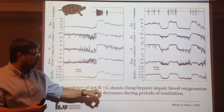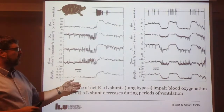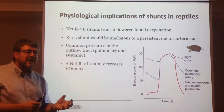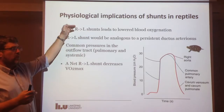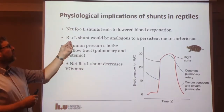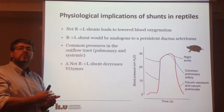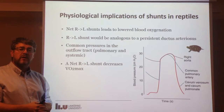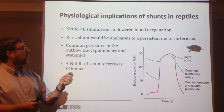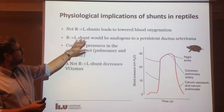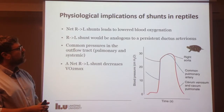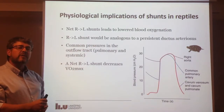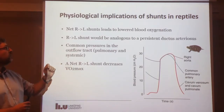Notice very clearly that despite the presence of this right-to-left shunt at all times, there is a decrease in the net right-to-left shunt during periods of ventilation. When the animal ventilates, pulmonary flow increases much more than systemic flow, so the ratio between pulmonary and systemic flow increases. The net shunt is in the right-to-left direction, bypassing the lungs, but it actually decreases during ventilation. This right-to-left shunt would be similar to what I described in the previous lecture as a persistent ductus arteriosus — actually, no, that's a bad example, because a persistent ductus arteriosus would lead to systemic-to-pulmonary flow, which is the opposite of what we are seeing here.